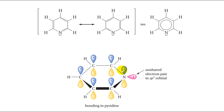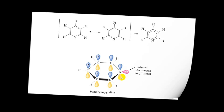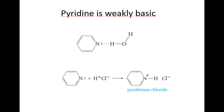The unshared electron pair on nitrogen lies in the ring plane in an sp2 orbital. Because of the similarities in bonding, pyridine resembles benzene in shape. It is planar with nearly perfect hexagonal geometry.